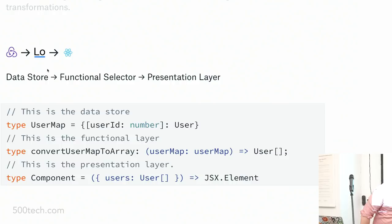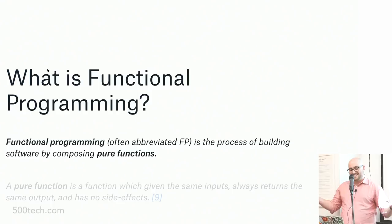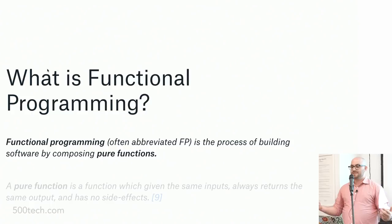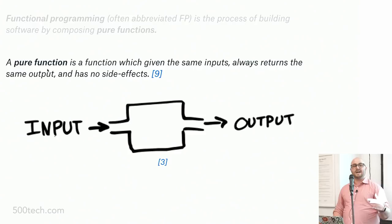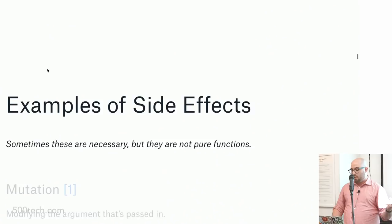So what exactly is functional programming? Functional programming, often abbreviated FP, is the process of building software by composing pure functions. A pure function is a function which, given the same inputs, always returns the same output and has no side effects. So 2 plus 2 is always 4, 3 times 3 is always 9 — these don't have any side effects. One of the earlier talks discussed side effects, and now we're going to cover what some of those are.